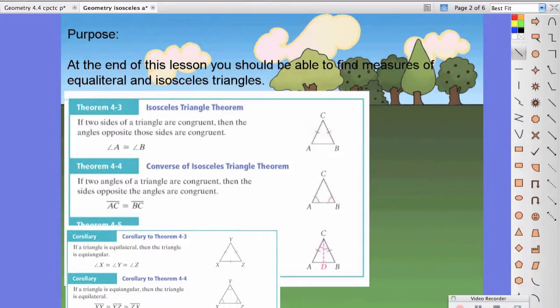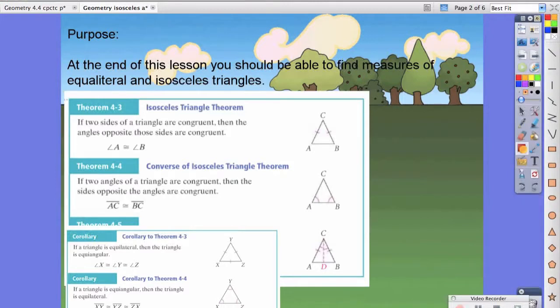then that means the sides opposite them are the same. Therefore, line segment AC is congruent to line segment BC.